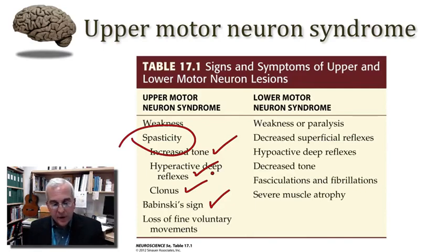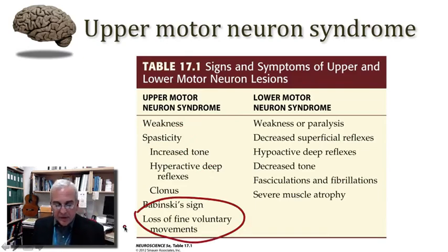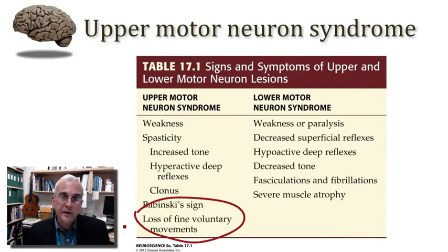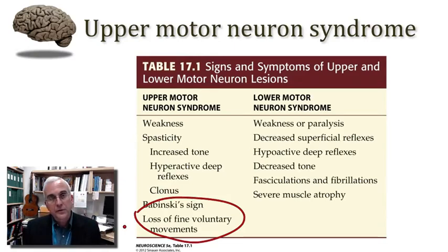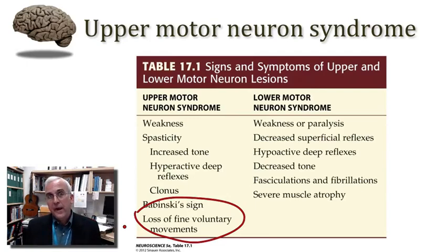One final point about upper motor neuronal damage is that the kind of movement especially affected is the fine volitional movement that expresses skill. Much of the motor cortex and the corticospinal system is concerned with the expression of skill with the distal extremities. So it would make sense that if there is damage to the motor cortex, the greatest loss would be in the expression of skill with our hands, our feet, and our lower oral facial structures.